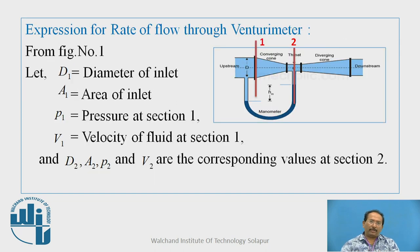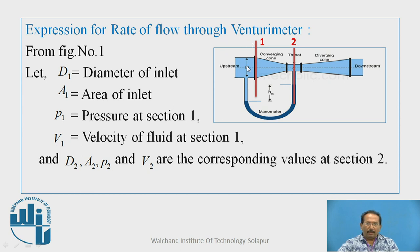We will now find out the expression for the rate of flow. Looking at the figure: D1 is the diameter at the inlet, A1 is the area at inlet, P1 is the pressure at section 1, V1 is the velocity of fluid at section 1, and similarly D2, A2, P2, V2 are the corresponding quantities at section 2, which is the throat. We have selected these two points — inlet and throat — and we are applying Bernoulli's equation between sections 1-1 and 2-2.